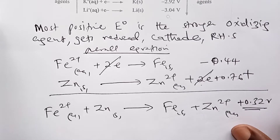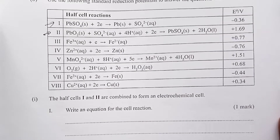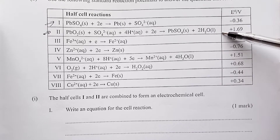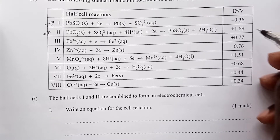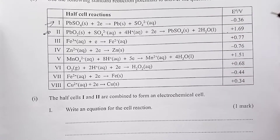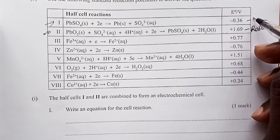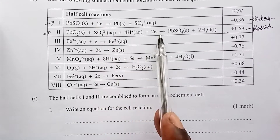Let us go back to the question and now answer. We have been told to write an equation for the cell reaction using half cells 1 and 2. Before we write it, as we have just explained, which one are we going to oxidize and which one are we going to reduce? This one here will be reduced because it is the most positive. So this one will undergo reduction, and this one will undergo oxidation. But from the way they are written, it is like all of them have been reduced, so we have to reverse the order of the oxidized one.